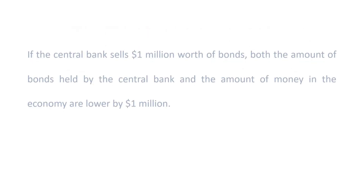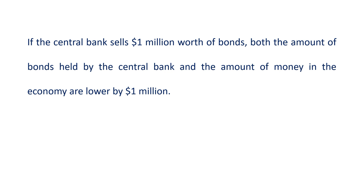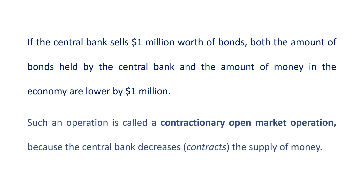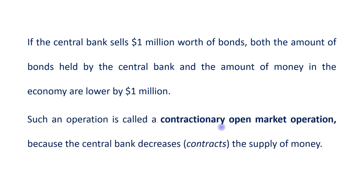In the opposite case, if the central bank sells $1 million worth of bonds, both the amount of bonds held by the central bank and the amount of money in the economy are lower by $1 million. Such an operation is called a contractionary open market operation because the central bank decreases or contracts the supply of money.